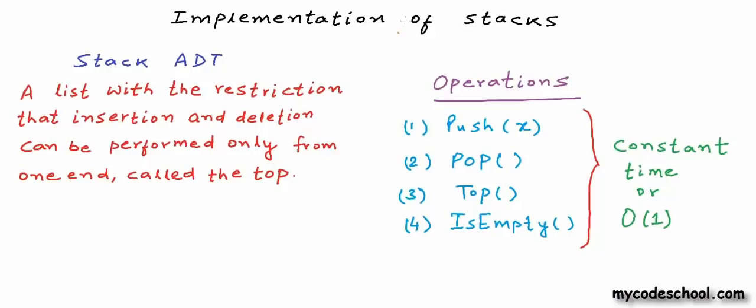A stack is a list or collection with the constraint that insertion and deletion — which we call push and pop operations — must be performed one element at a time and only from one end, which we call the top of the stack. If we add only this one extra constraint to any implementation of a list, that insertion and deletion must be performed only from one end, then we can get a stack.